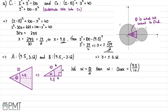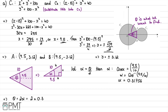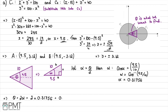Taking the inverse cosine, alpha equals cos negative 1 of 9.5 over 10. With our calculator in radians, this comes out as 0.31756. Then theta equals 2 times alpha, so theta equals 2 multiplied by 0.31756, which gives 0.63512.